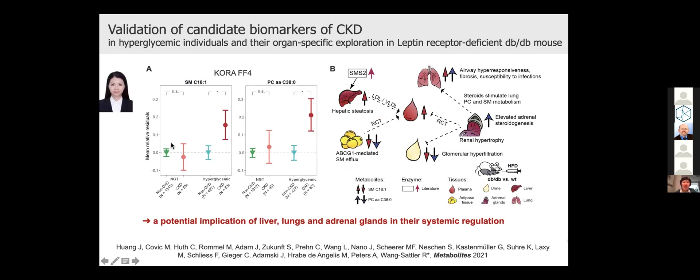Jialing further did another analysis to validate the identified two metabolites in the KORA-FF4 study. As you can see, nicely confirmed also in the cross-sectional study. Jialing also tested in multiple organs of diabetic mice. As you can see, these two metabolites both nicely validated only in the liver of diabetes mouse when compared to the wild-type controls, whereas we saw opposite effect in adipose tissues and urine samples. Overall, our study indicated potential implication of liver and also one metabolite in plasma of the DBDB mice.